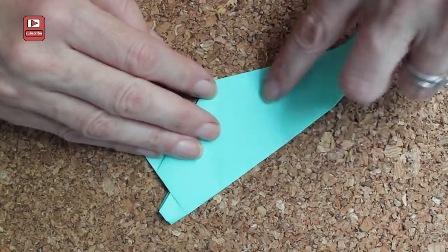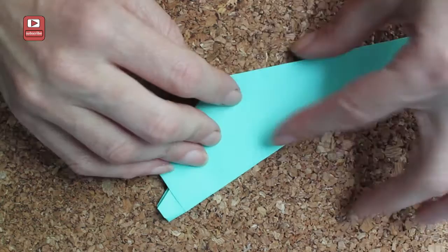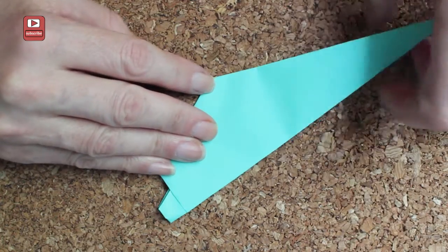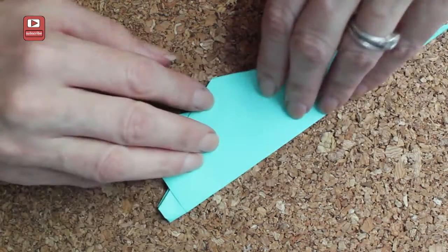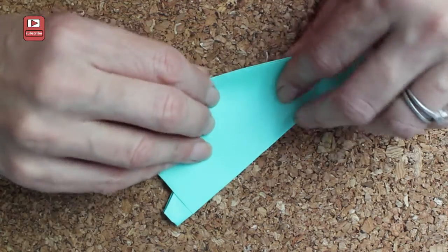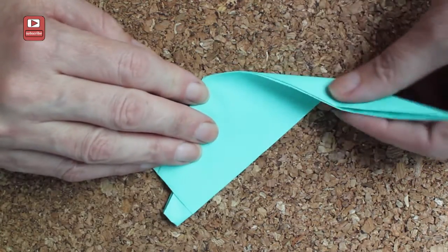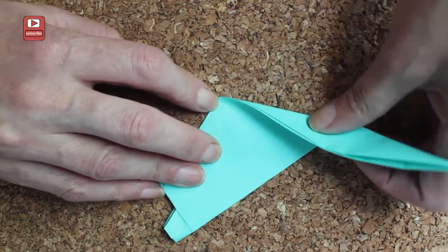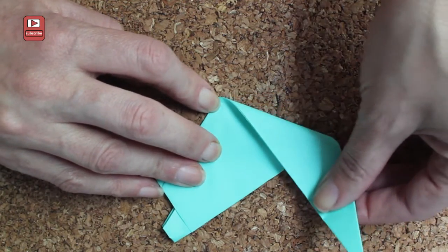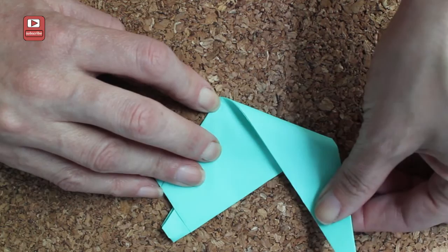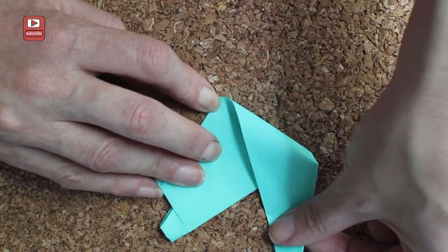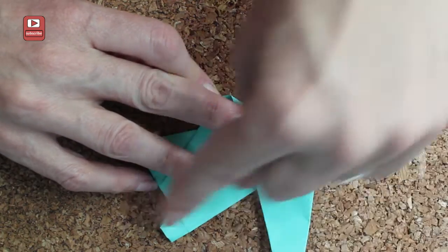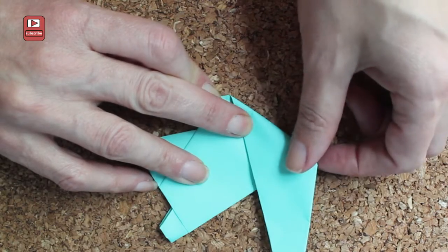Alright, now we're going to make the neck and head. So I always have difficulty with its head, but it's going to come out this time. So we're going to fold it. You don't want to go straight up and down. You want it slightly back, pointing to the back, but not by much.